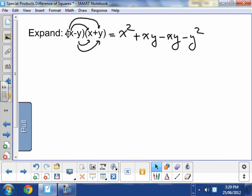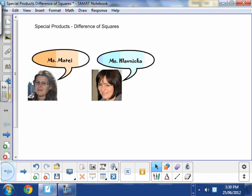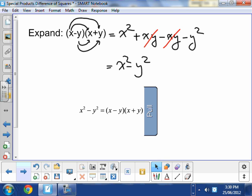So look what happens here. I see a positive xy and a negative xy. So guess what? I'm left with x squared minus y squared. What a surprise. Now I understand my title, difference of squares. That's exactly what we have here. Difference of squares equals x minus y, x plus y. Correct? That's correct.